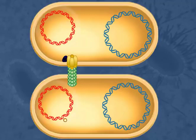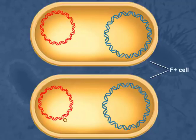In the end, both cells wind up with a complete double-stranded copy of the F-factor. Their connection through the pilus is released, and each is now an F-plus cell that can go on to conjugate with other cells.